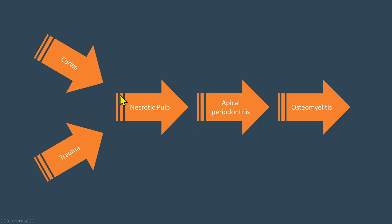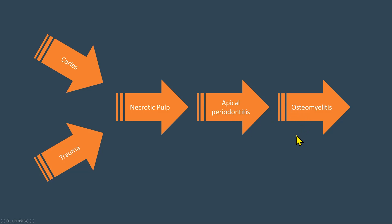Apical periodontitis may arise from caries or trauma that makes the pulp necrotic. The necrotic pulp will undergo the process of apical periodontitis, which is an inflammatory condition. If the apical periodontitis is not treated, ultimately it can become an osteomyelitis.